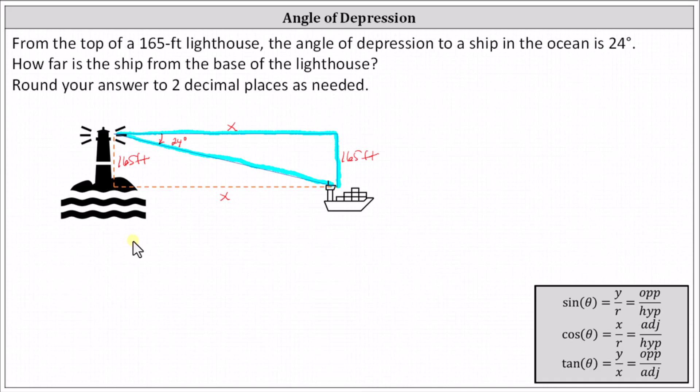Which indicates tangent 24 degrees equals the ratio of the opposite side to the adjacent side, which is 165 divided by X.